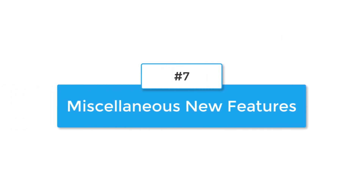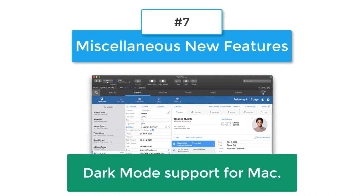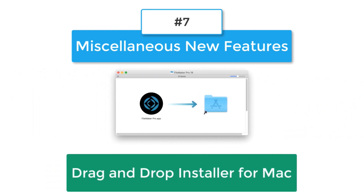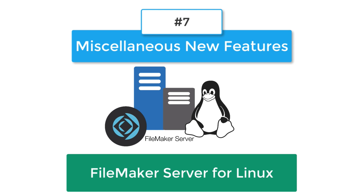Number seven on our list is a collection of miscellaneous items. First, we have dark mode support for the Macintosh. We have card style window support on WebDirect, which a lot of users have been wanting. We also have a drag-and-drop installer for the Macintosh — just open FileMaker Pro, drag and drop it to your Applications folder, and you're done. For fans of Linux, there is now a Linux version of FileMaker Server, joining the existing Mac server and Windows server options, plus FileMaker Cloud on Amazon. So you have a number of deployment options for the FileMaker platform.